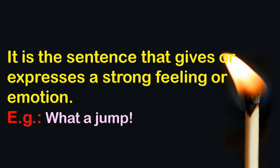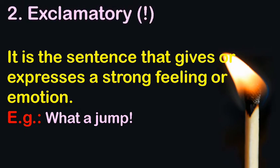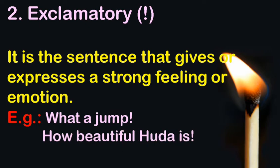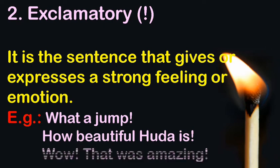The second type is the exclamatory sentence — it expresses a strong feeling or emotion. Exclamatory sentences always end with an exclamation mark. For example: 'How beautiful Huda is!' and 'Wow, that was amazing!' These sentences carry a strong feeling or emotion.